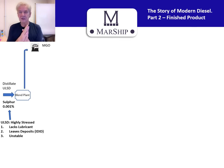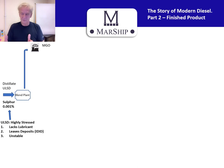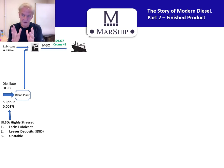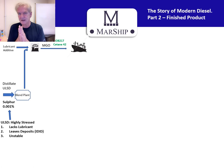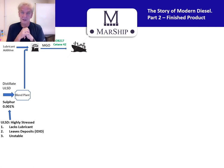Nevertheless, it goes to the blend plant. From the blend plant it will go on to become, for example, marine gas oil, which has to have a lubricant additive added — that distillate does not have any lubricity, so you need a lubricity additive put in before you can make the marine gas oil.